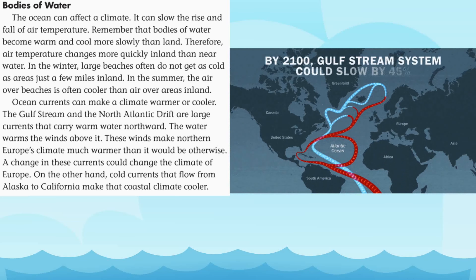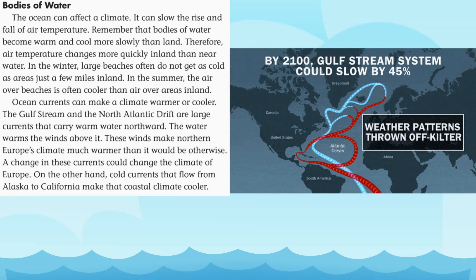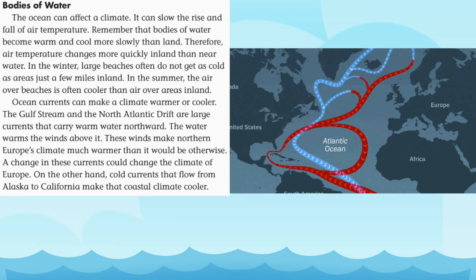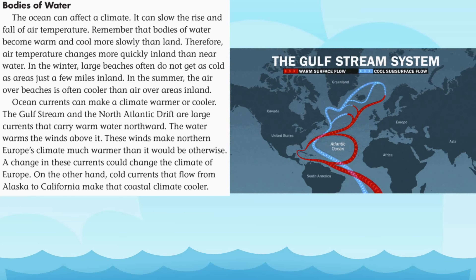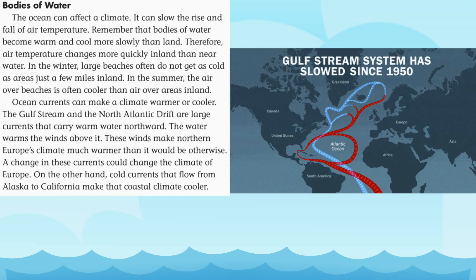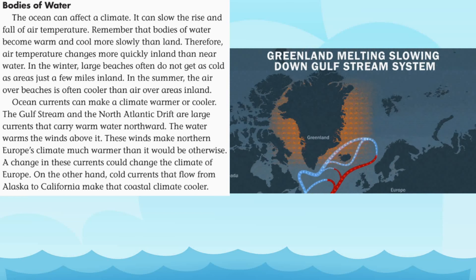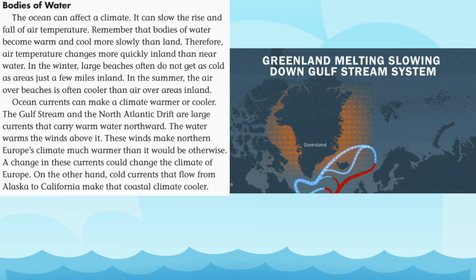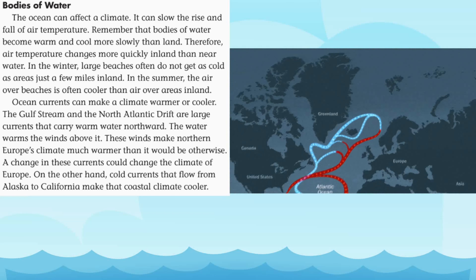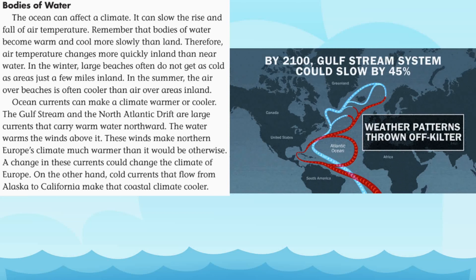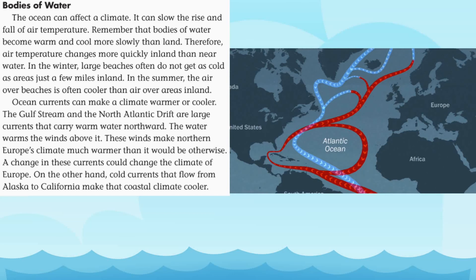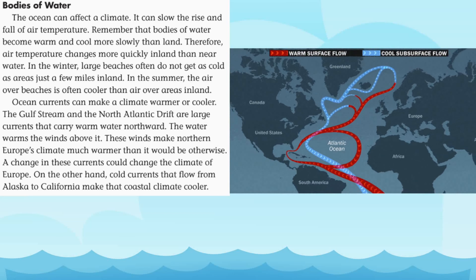Ocean currents can make a climate warmer or cooler. The Gulf Stream and the North Atlantic Drift are large currents that carry warm water northward, warming the winds above them. These winds make Northern Europe's climate much warmer than it would be otherwise, and a change in these currents could change Europe's climate. On the other hand, cold currents flowing from Alaska to California make that coastal climate cooler.